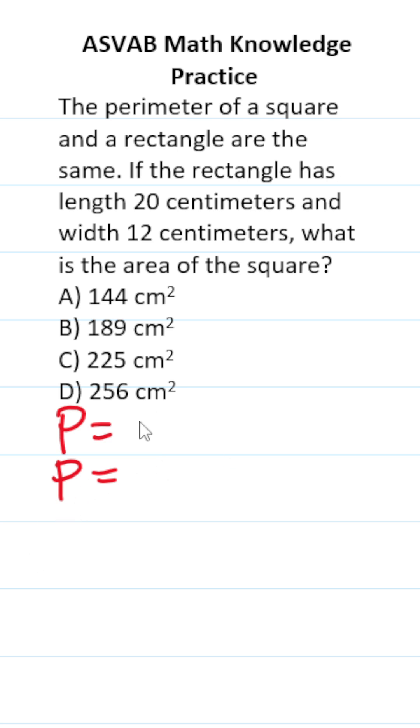We need the perimeter of a rectangle, which is 2w + 2l, the perimeter of a square, which is 4s, and the area of a square, which is s².